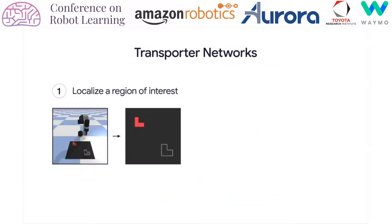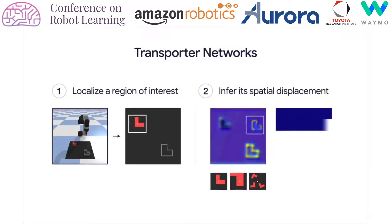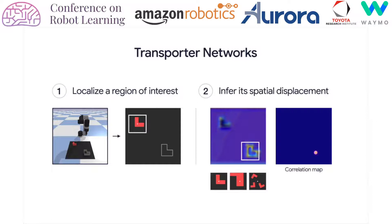To this end, we present the Transporter Network, a simple model architecture that learns to attend to a local region of interest, then predict how it should move in the next time step, where the local region can encompass an object, part of an object, or multiple objects. A key aspect of the model is that it preserves spatial structure of the data. Rather than predicting continuous values, it instead rearranges the deep visual features of the local region and overlays it across the scene to find the best target placement configuration. We call this the transporter operation.